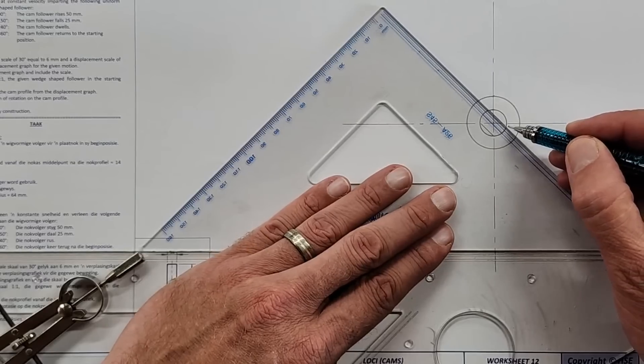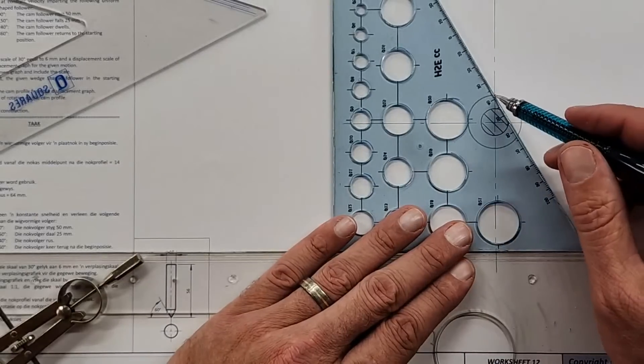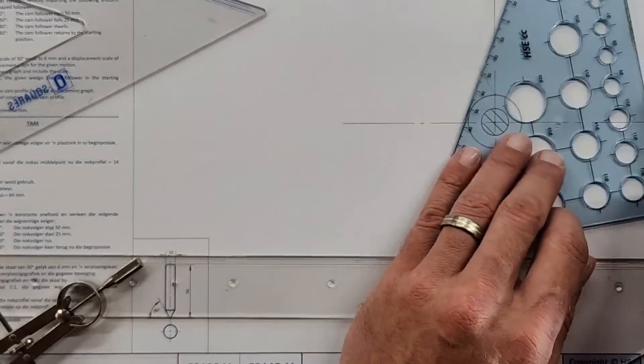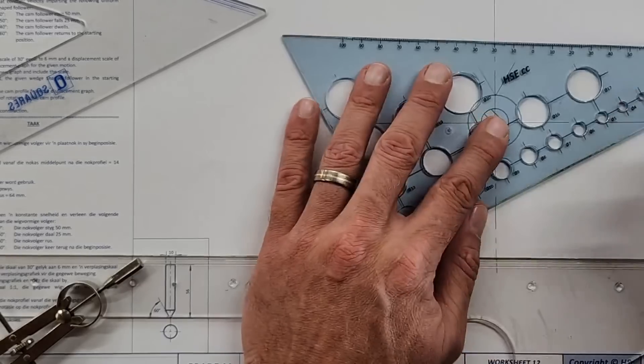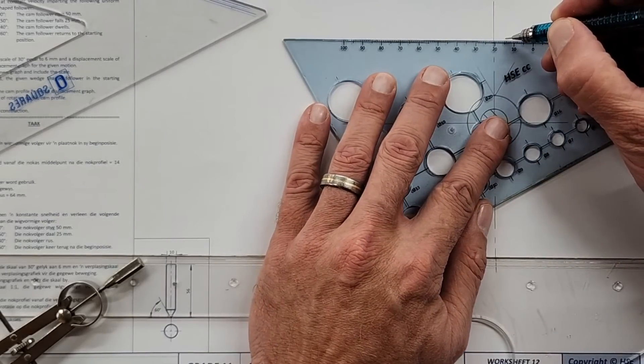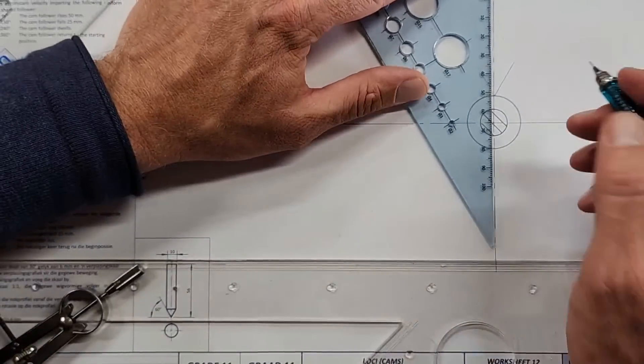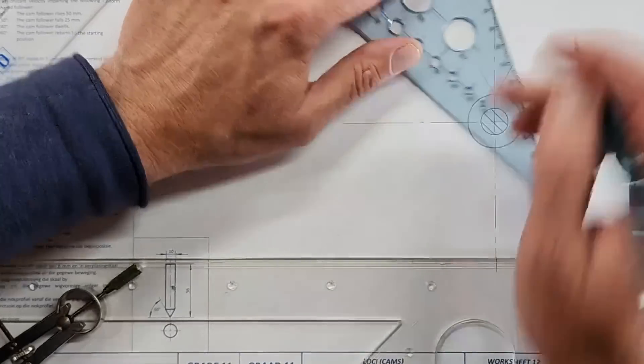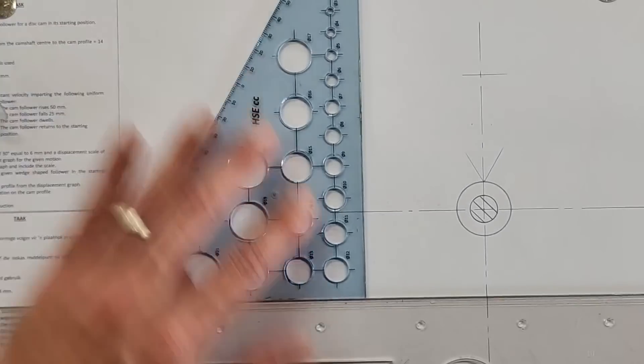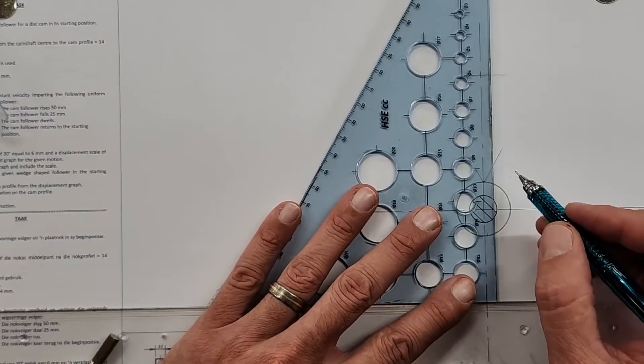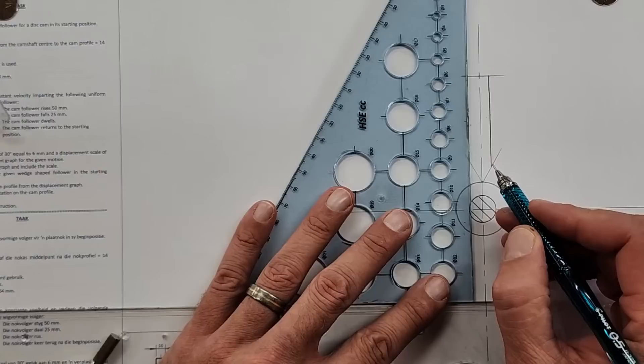Let's just draw the follower now in position. We've got 60 degrees this side as well as this side, the width there is 10, so 5 on each side, and then the height there is 56. This part of the drawing just to get started shouldn't take you the whole day, should be nice and quick. There's our follower.